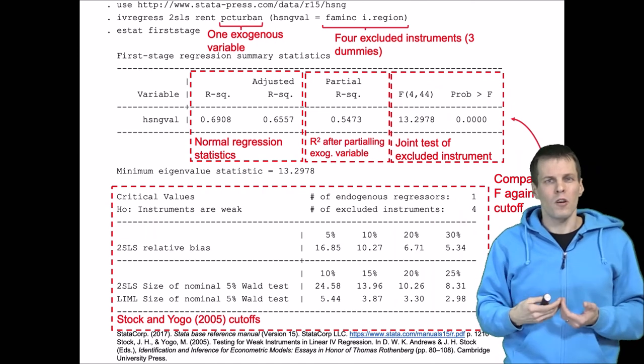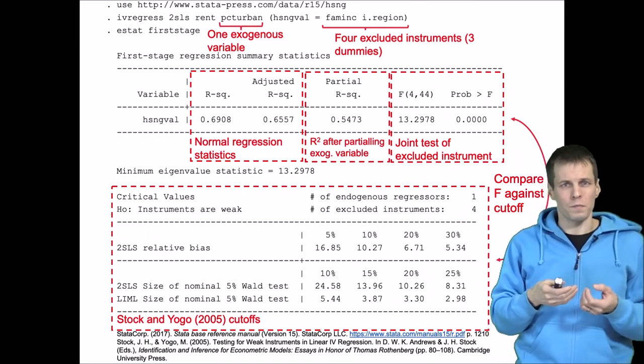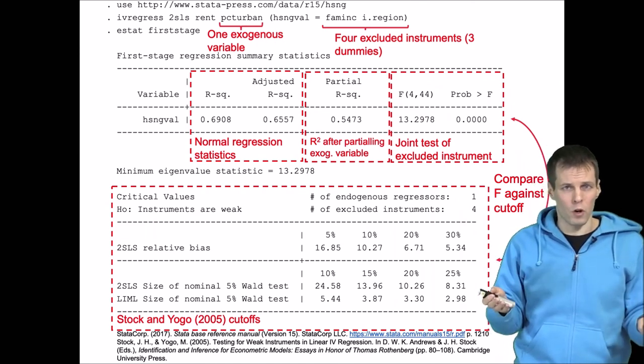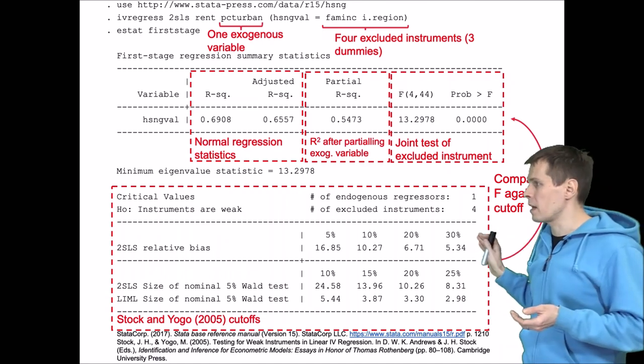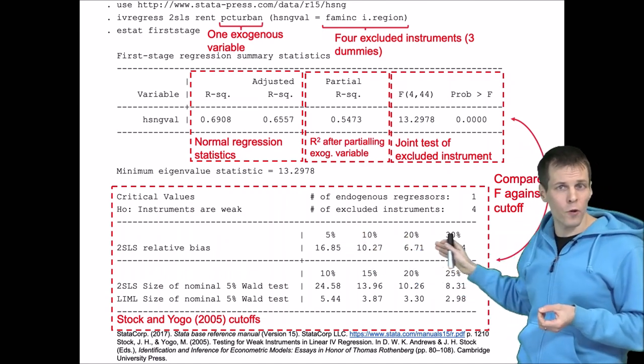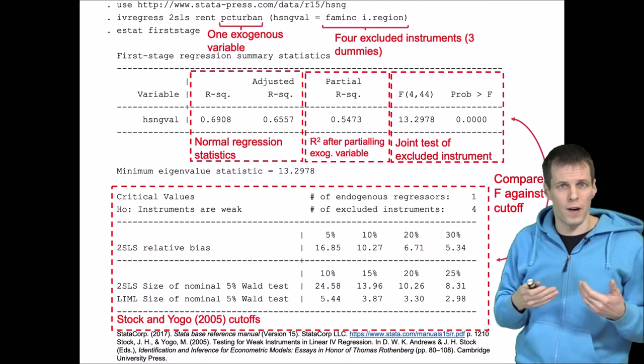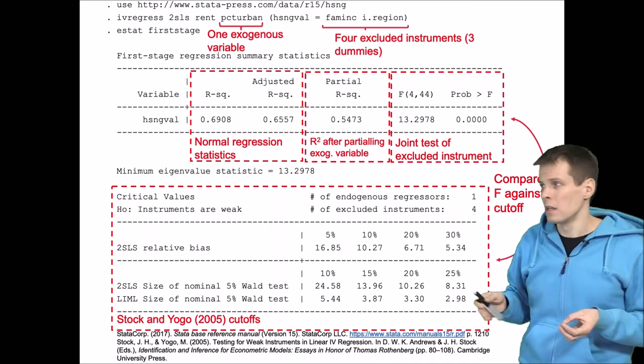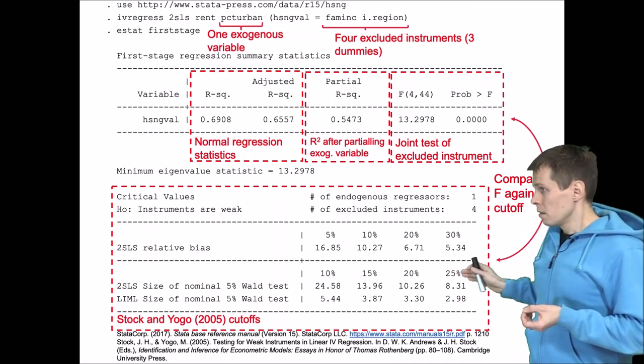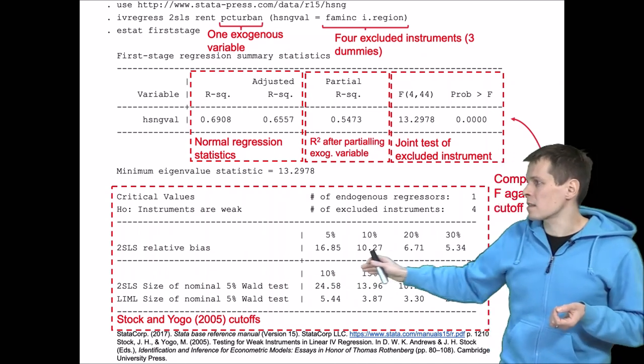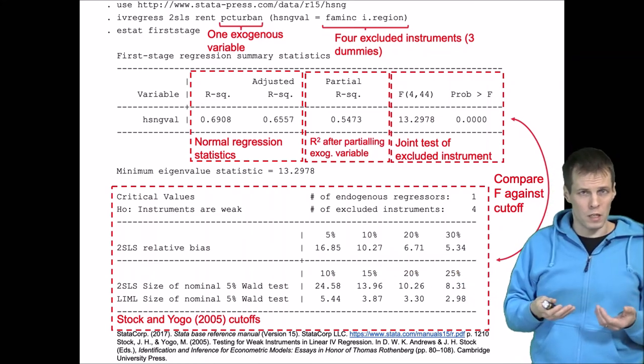So it depends on how much bias we are willing to tolerate, and these reference values are calculated by Stock and Yogo for your model, for your sample size, and for the number of variables that you have in your analysis. Then for significance tests, we will get false positives.